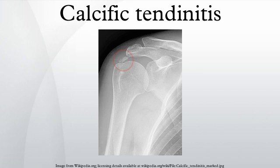Calcific tendonitis, also called calcific periarthritis, is a disorder characterized by deposits of hydroxyapatite in any tendon of the body, but most commonly in the tendons of the rotator cuff, causing pain and inflammation. The condition is related to and may cause adhesive capsulitis.